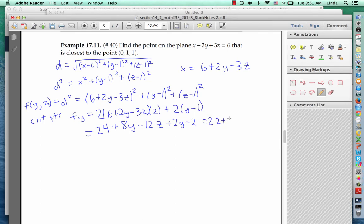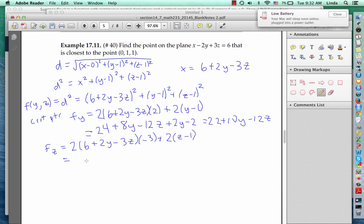We can do a similar computation to find f sub z, which is twice 6 plus 2y minus 3z times negative 3 plus twice z minus 1 times 1, which simplifies to negative 36 plus 12y plus 18z plus 2z minus 2, which is minus 38 plus 12y plus 20z.